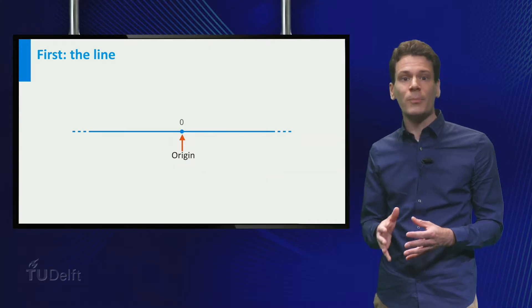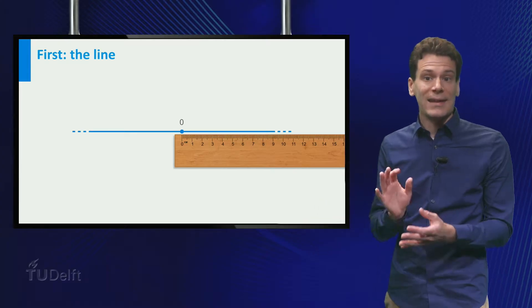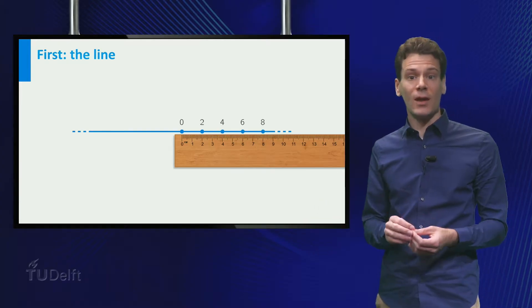For each other point on the line, we can measure the distance to the origin, let's say in centimeters. And this way, we can associate a number to each point.